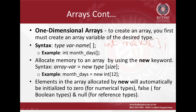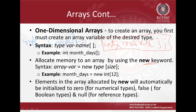Declaring an array name does not reserve or allocate memory until we use the new keyword to specify the size of that array. The square brackets can be placed after the variable name or right after the data type. In Java, the convention is to put the square brackets just after the data type — for example, int[], and then the array name.